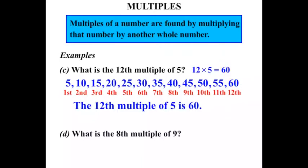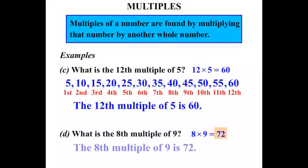What is the eighth multiple of 9? Let's do it the quick way. The eighth multiple of 9 — we're going to be thinking 8 times 9, and 8 times 9 of course equals 72. So we can say that the eighth multiple of 9 is 72.